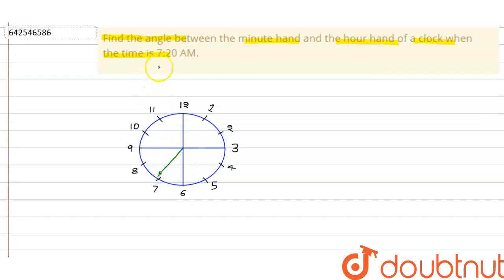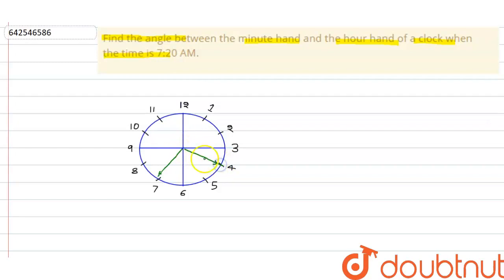Now we have the minute hand — actually we have the minute hand at 20 minutes, so this will be 20 minutes. This is the clock at 7:20; this is 20 minutes — this is the minute hand, and this is the hour hand.